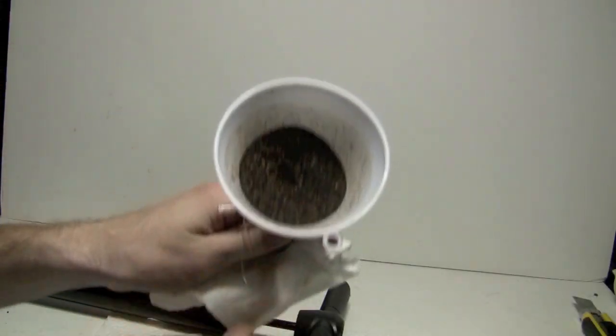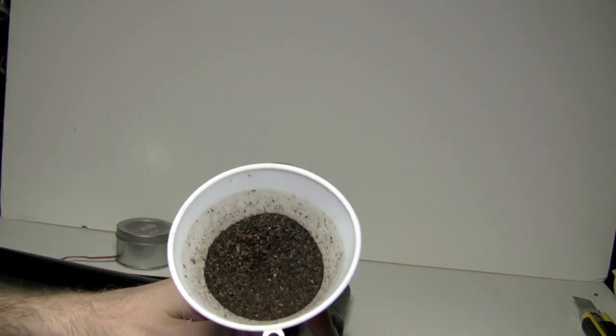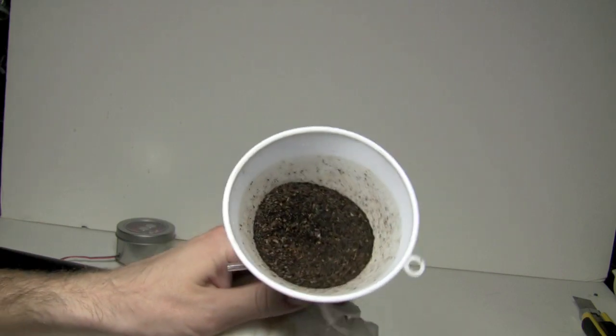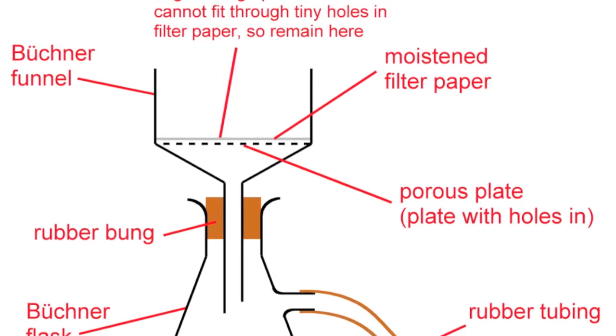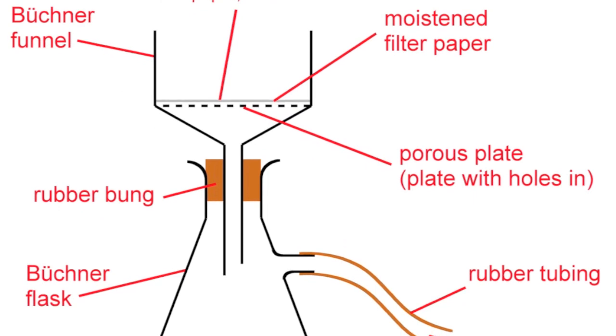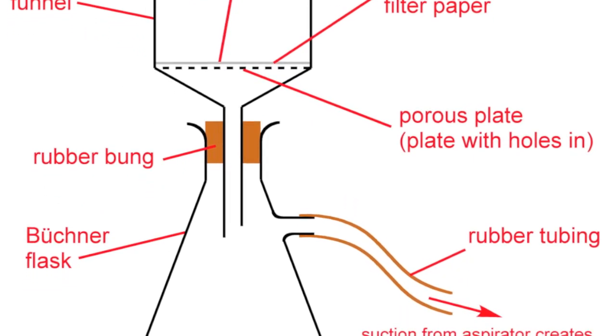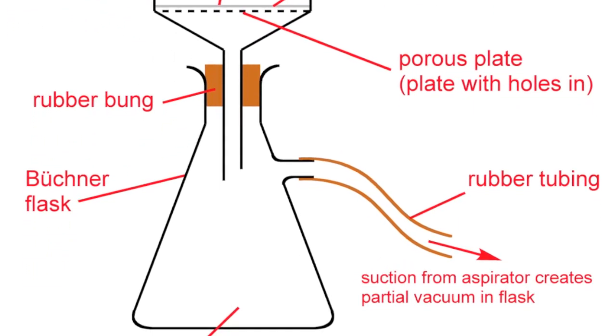Another cool thing is that the filter contents are almost dry, so we lost almost no product. The vacuum filtration device we built is called Buchner flask. It's named after its inventor, German industrial chemist Ernst Buchner.